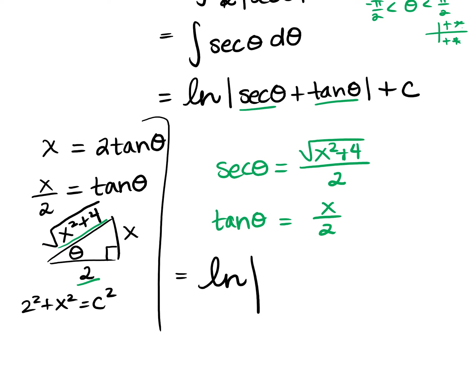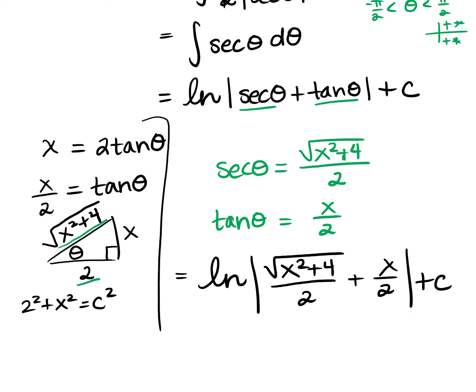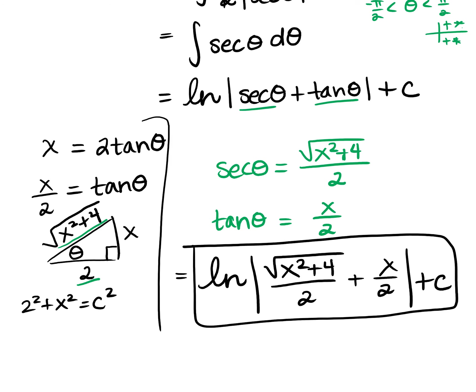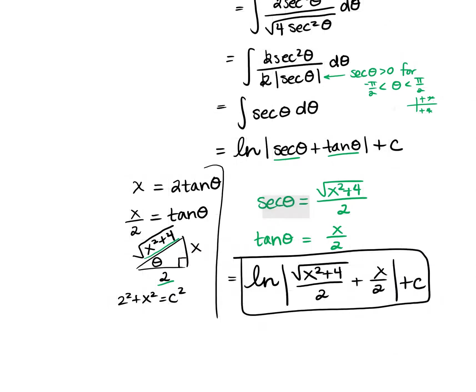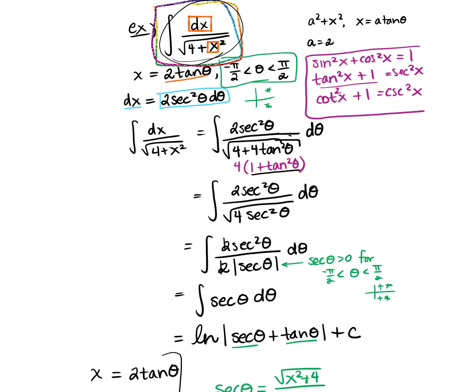So the final answer is ln|√(x² + 4)/2 + x/2| + C. And we're done. See how powerful trig substitutions are — if you tried any other method, you can't do a plain u-substitution since you don't have a derivative of x² there. Integration by parts would be messy. The only real approach here is a trig sub.